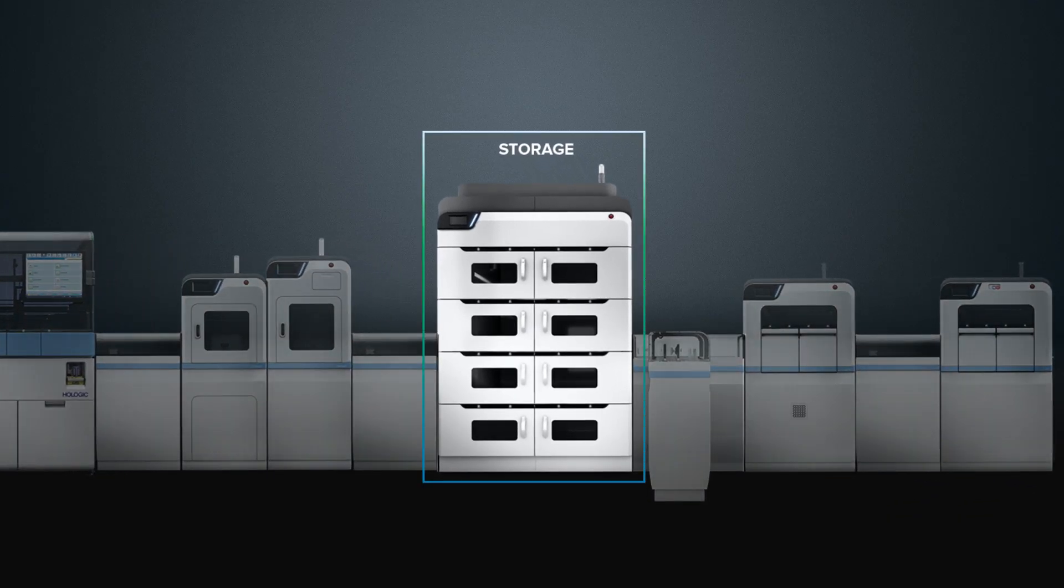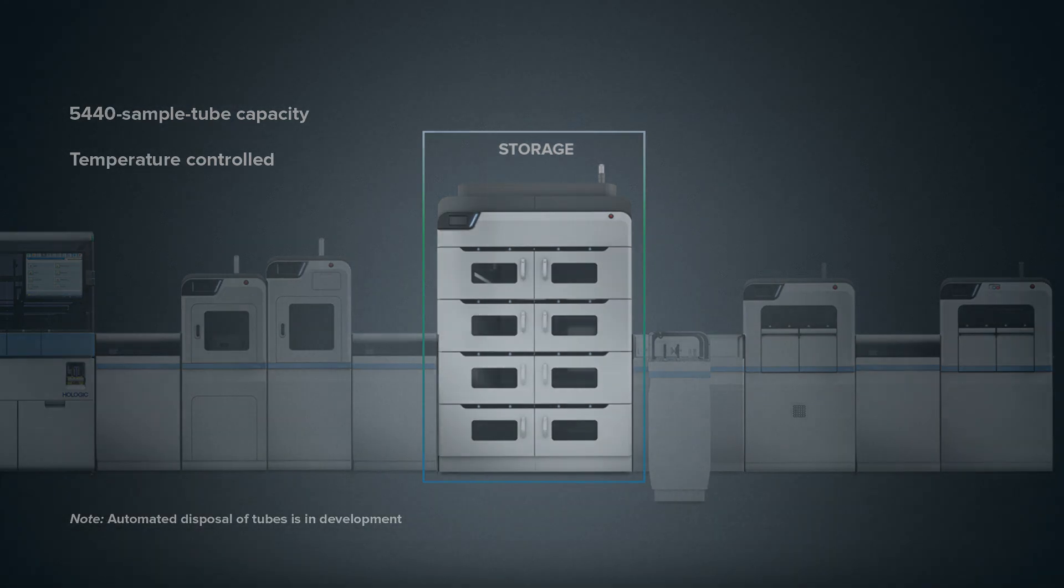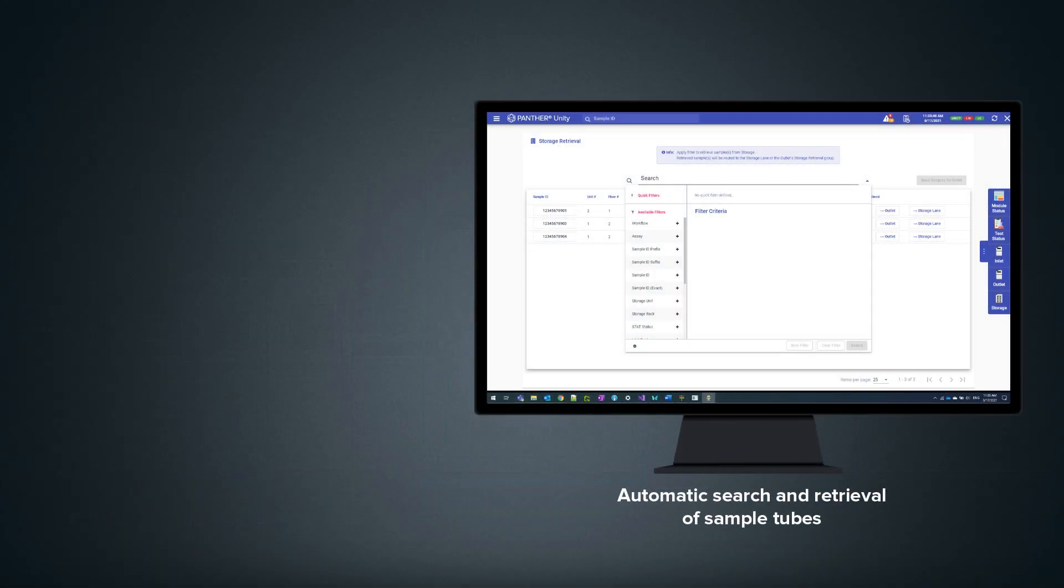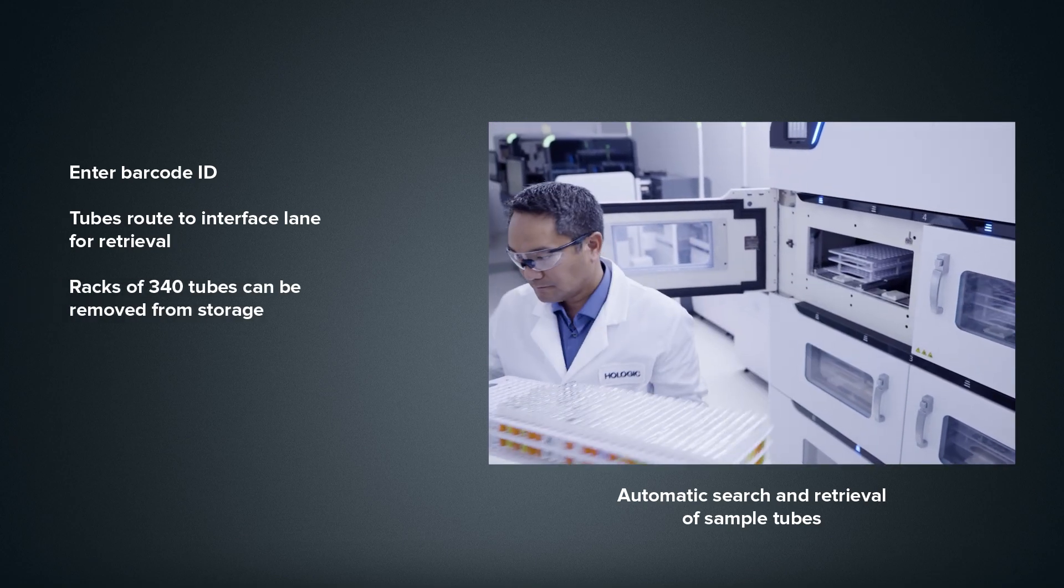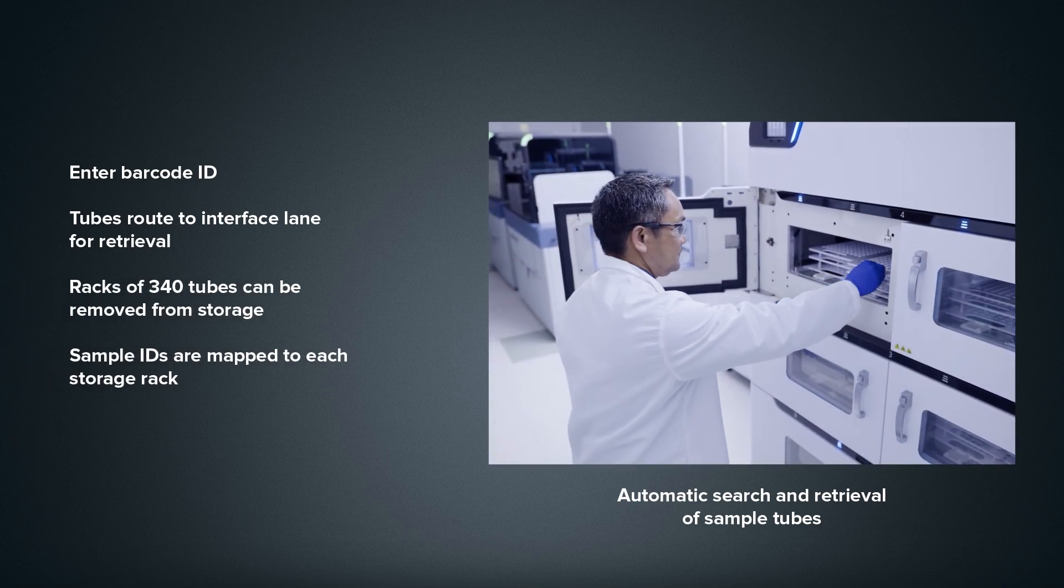Each storage module holds up to 5,440 sample tubes, giving your lab access to one of the most powerful tools to automate laboratory pain points, including the ability to automatically search and retrieve specimens by simply entering a sample barcode ID into the software, and unloading one or more tubes from this retrieval lane, or a full rack of tubes directly from the storage module.